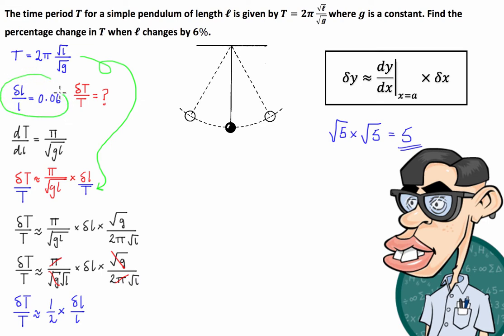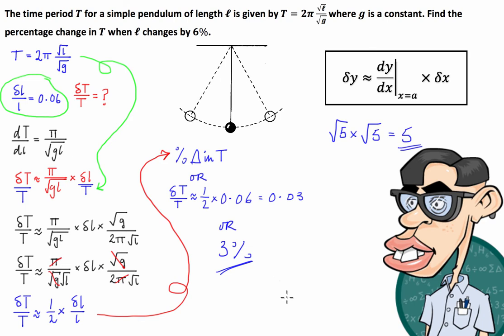So the percentage change in T is going to be approximately one half times 0.06 which is equal to 0.03 or three percent. So there you have it guys, when the length of a pendulum is changed by six percent, its period or the time it takes to swing back and forth will change by three percent.